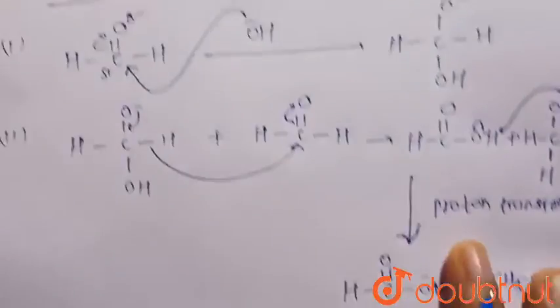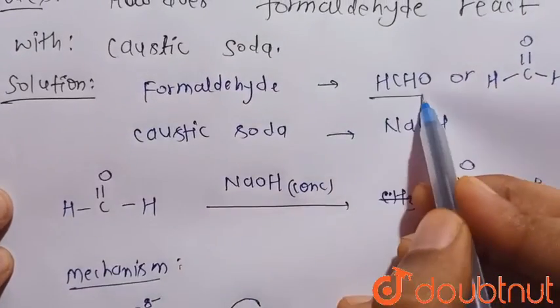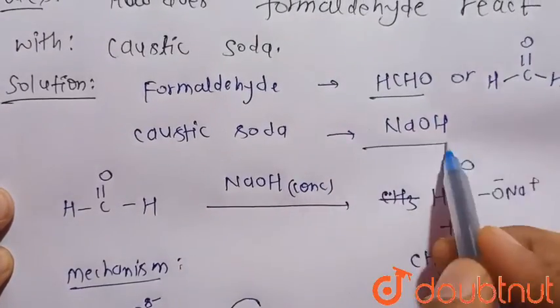So this is the required reaction of formaldehyde, that is HCHO, with caustic soda, that is sodium hydroxide.